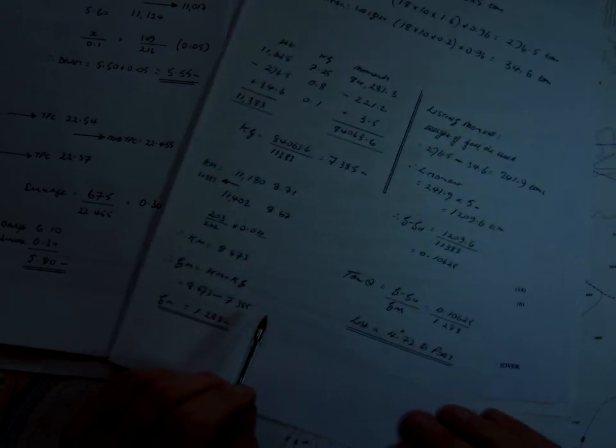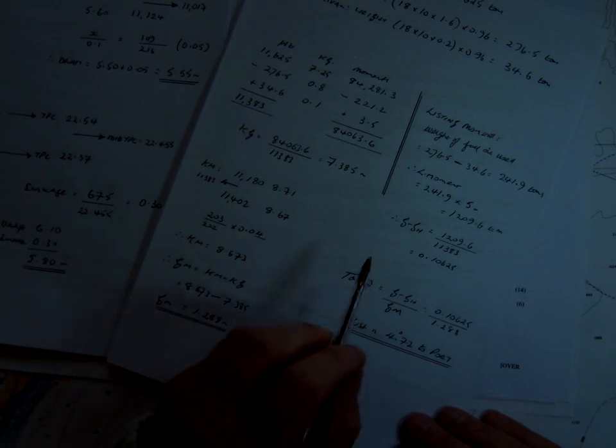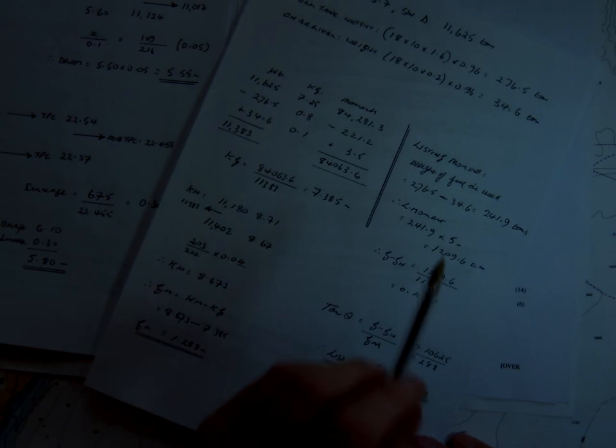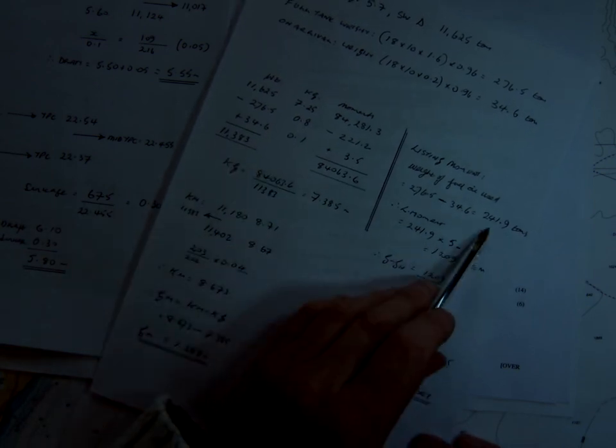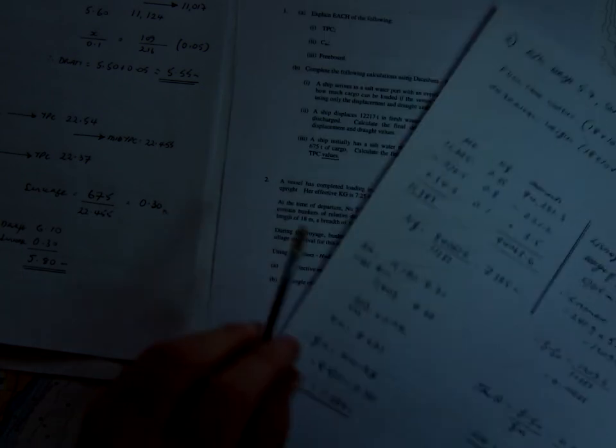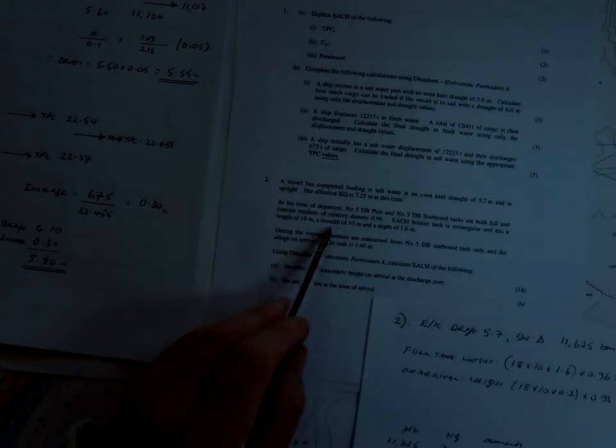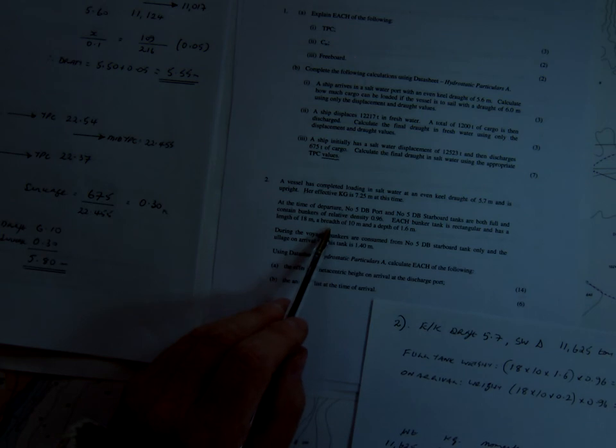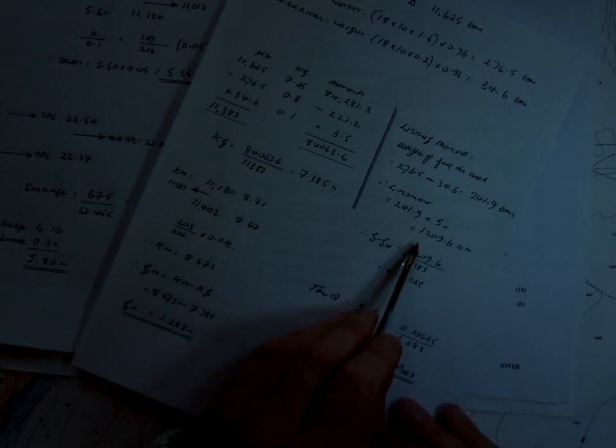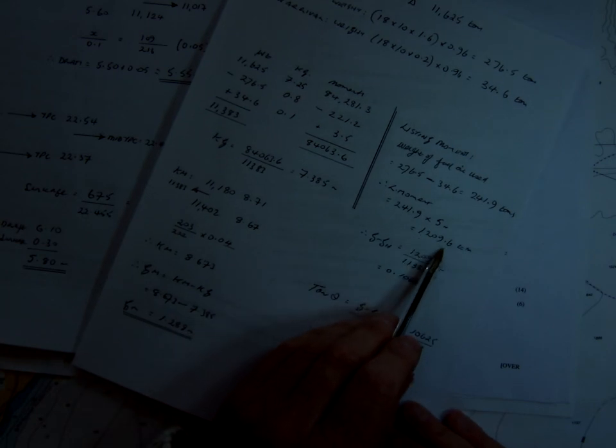Second part, we find out what list we are when we arrive at port. Well, a listing moment is a weight times a distance, and the weight we've discharged is 241.9. The distance, well, the breadth of the tank, it says here, is 10 metres, but of course we only use 5 metres when we're dealing with listing moments. So it would be 241.9 times 5, so we've got a listing moment, 1209.6.